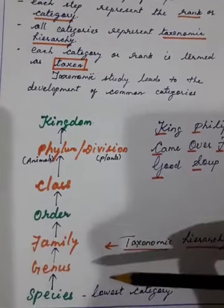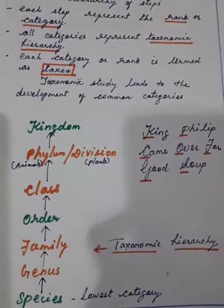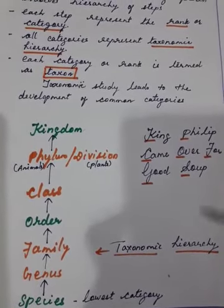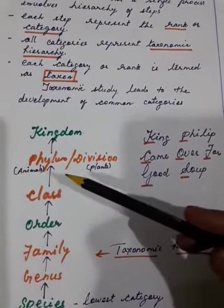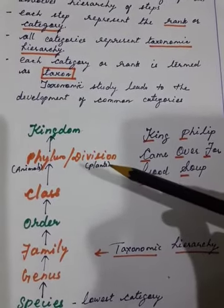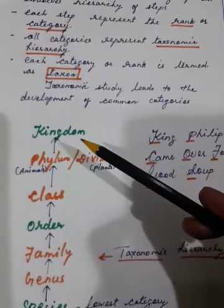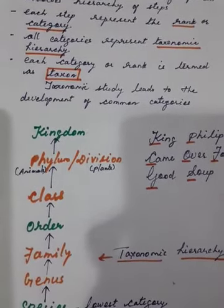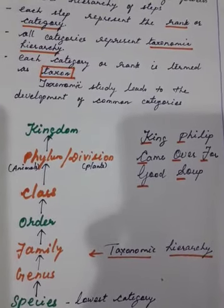Starting from species — this is the lowest category or lowest rank in taxonomic hierarchy — then genus, then family, order, class, phylum (for animals) or division (for plants), and finally the highest category is kingdom. The highest taxon in the taxonomic hierarchy is kingdom.